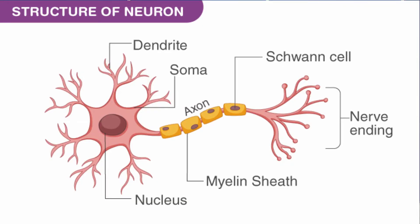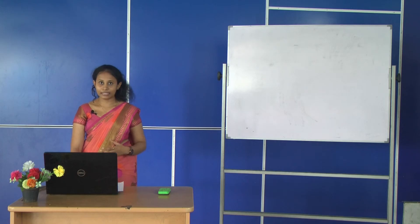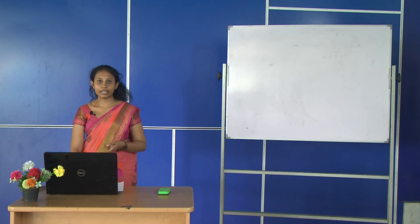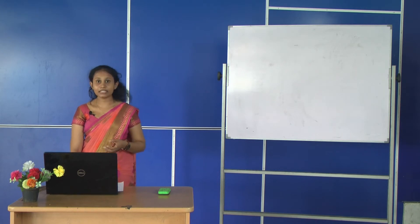The most unique and important part of neurons are the extensions that extend from the cell body. There are two kinds of extensions: dendrites and axons. Dendrites are extensions of neurons that receive signals and conduct them towards the cell body, whereas axons are extensions that conduct signals away from the cell body.